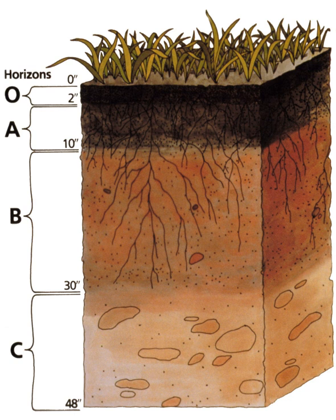Ultramicropores are suitable for habitation by microorganisms. Their distribution is determined by soil texture and soil organic matter, and they are not greatly affected by compaction. Size: 0.1 to 30 micrometers.